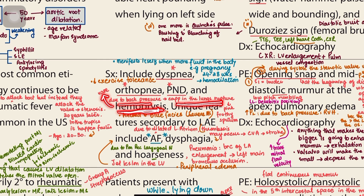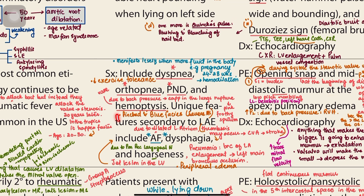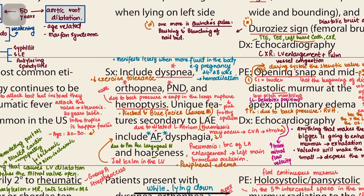Hemoptysis occurs because back pressure into the lungs causes pulmonary capillaries to rupture, producing pink frothy sputum. With severe mitral stenosis you may also find blue facies — because of increased back pressure, the lungs are unable to oxygenate the blood adequately, causing the face to appear blue.